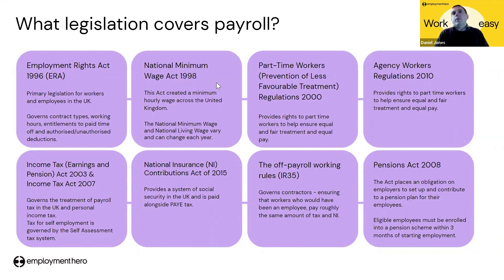The next two are the Part-Time Workers Prevention of Less Favourable Treatment Regulation 2000 and Agency Working Regulations 2000. These laws provide rights to part-time workers to ensure equal pay and fair treatment, enshrining their rights not to be treated less favourably than full-time workers. Then we have the Income Tax Earnings and Pensions Act and Income Tax Act 2007. This governs the treatment of payroll tax in the UK, how tax is calculated, and how tax is deducted from employees' wages.